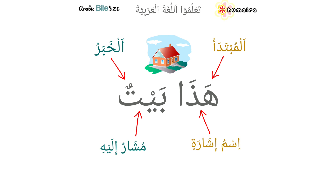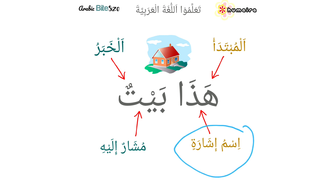Here, هذا is the subject. It is the focal point of the sentence. In the Arabic language, هذا is described as اسم إشارة للمفرد المذكر القريب العاقل وغير العاقل — it is a noun, اسم, and it is a noun of pointing.